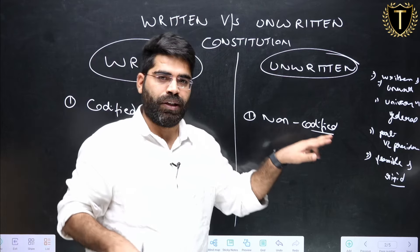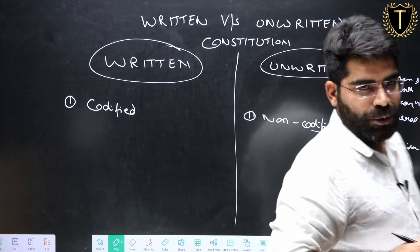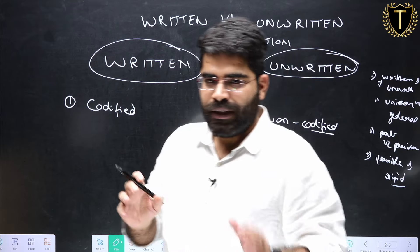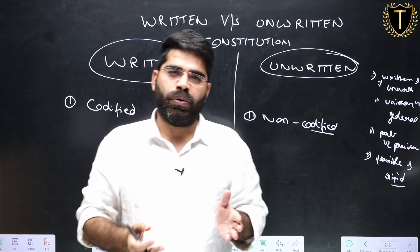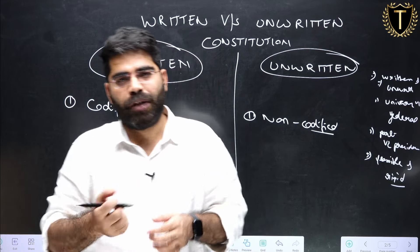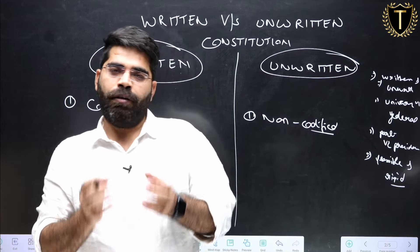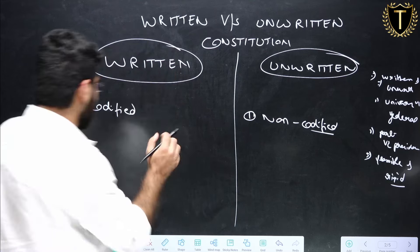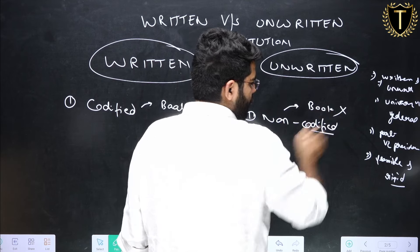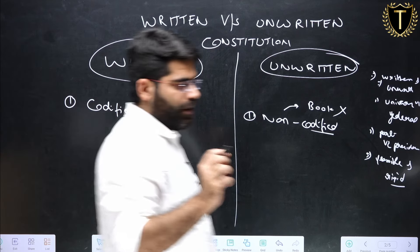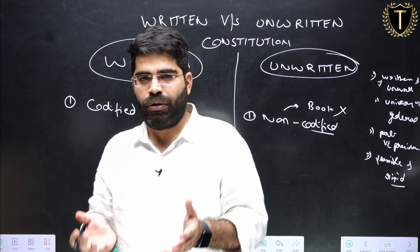But in case of an unwritten constitution, say you went to a library in England and asked for the British constitution — that person would have no answer, because there is not a single book called the British constitution. Whatever law has been made till now forms a part of the UK constitution. So there is no definite book; all laws which have been passed form part of the constitution.